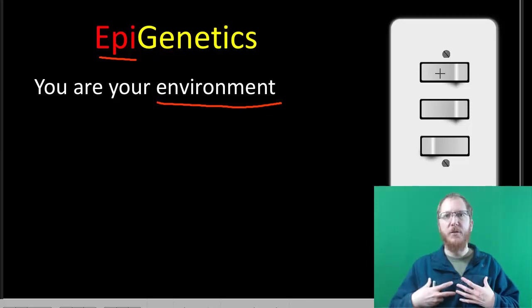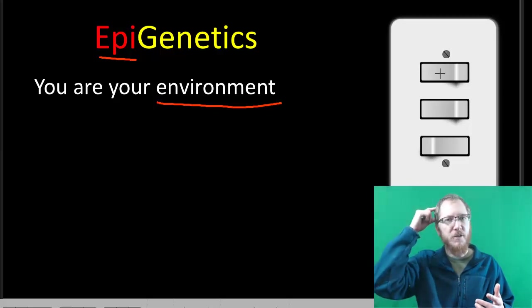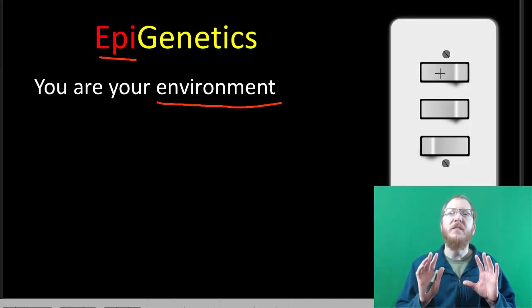That determination of whether or not to use a gene in a specific cell will be part of epigenetics. This is very important because all of the cells in our body have the same set of genes. The reason we have a skin cell and a kidney cell and an eye cell and hair follicle cells is that they use their genes differently, which allows them to have different jobs.